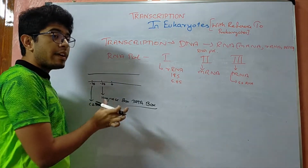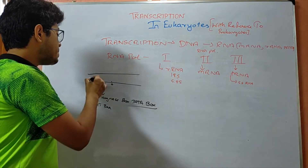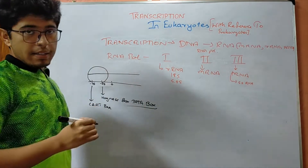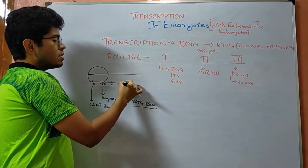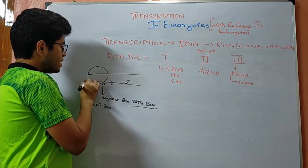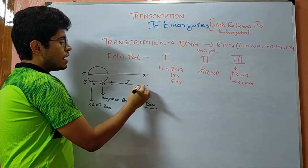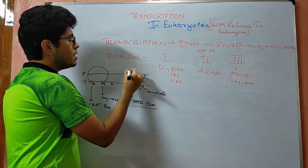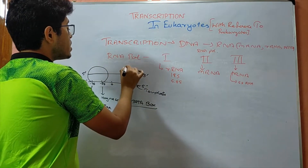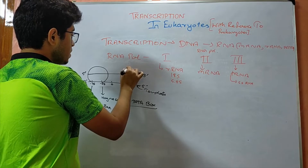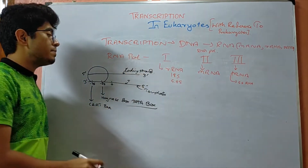We have the TATA box at the minus-25 sequence and also a minus-35 sequence. These sequences are required for the proper binding of the RNA polymerase. The strand running in the 3-prime to 5-prime direction is known as the template strand, and the other strand, which is similar to the mRNA that will be synthesized, is known as the coding strand.